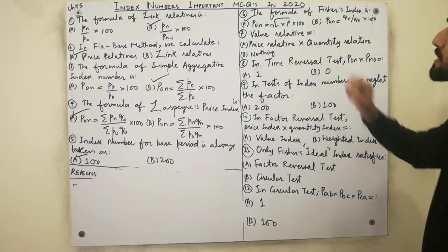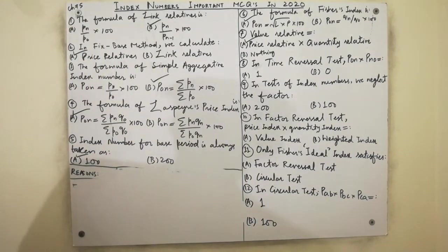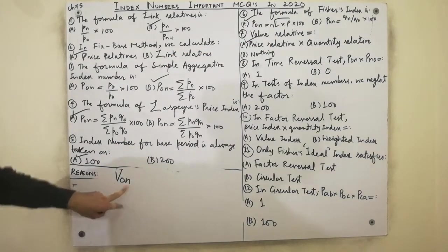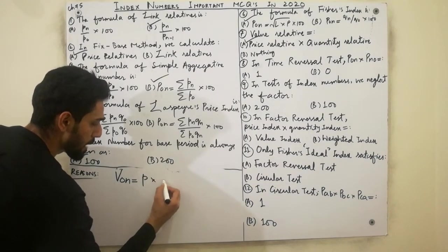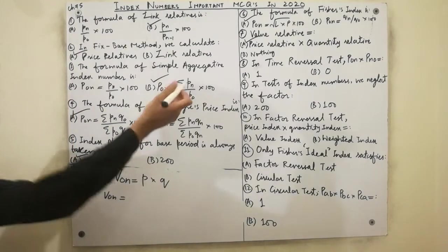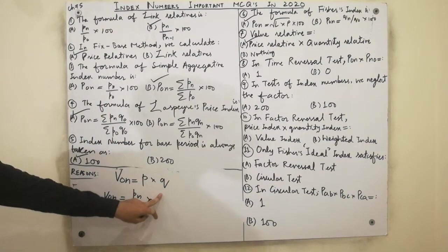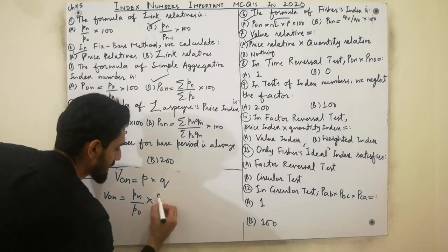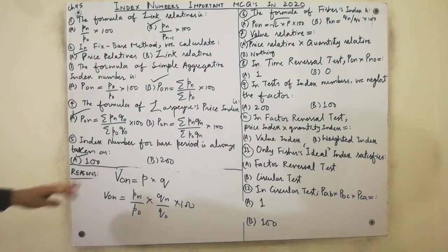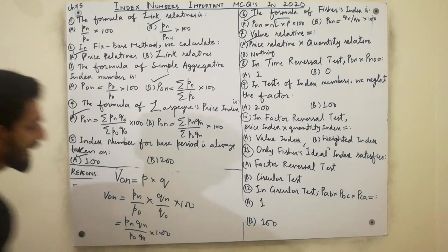Next MCQ: value relative is equal to price relative multiplied by quantity relative. Must remember that value relative is denoted by V-naught-N. V-naught-N equals price relative, which is PN divided by P-naught, multiplied by quantity relative. So the formula of value relative is V-naught-N equal to PN divided by P-naught, multiplied by QN divided by Q-naught, multiplied by 100. That is the formula of value relative.